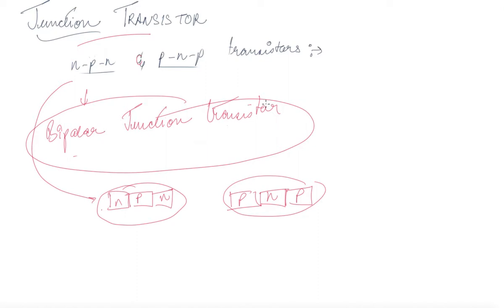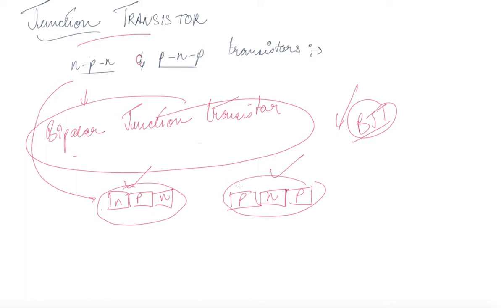For this particular syllabus we will only be concentrating on BJT, that is bipolar junction transistors. We have discussed what NPN and PNP are, and now the third important thing that comes into play is the symmetric representation of NPN and PNP configuration.